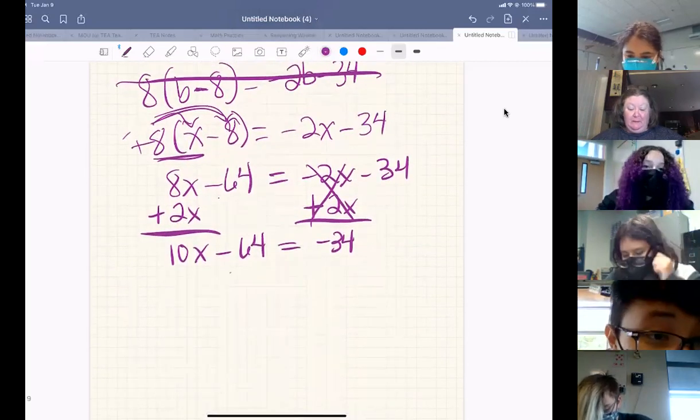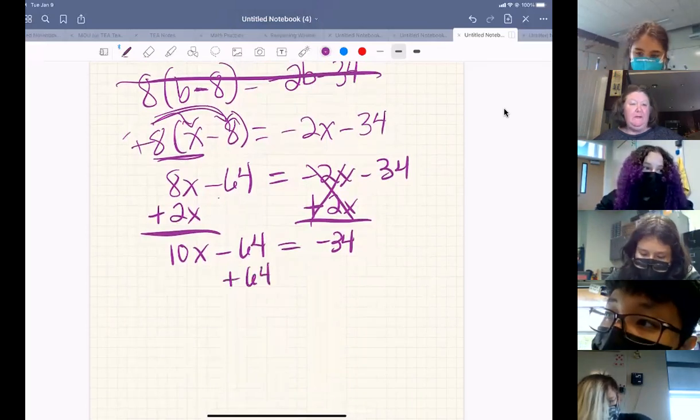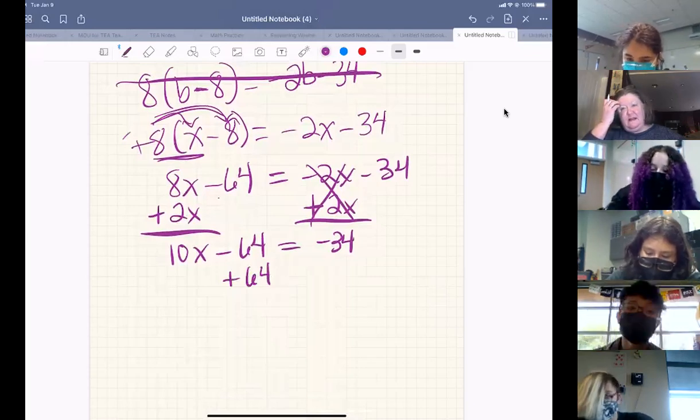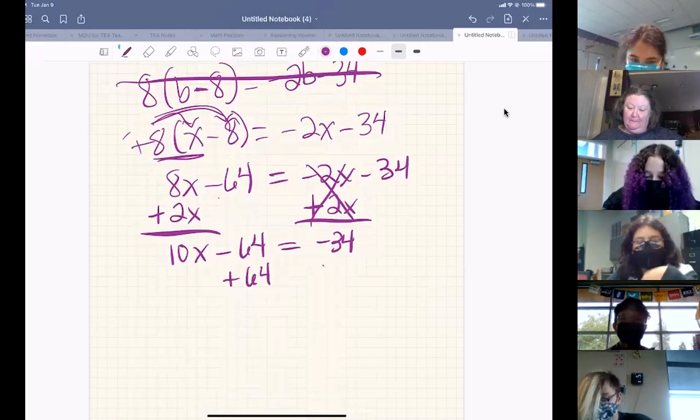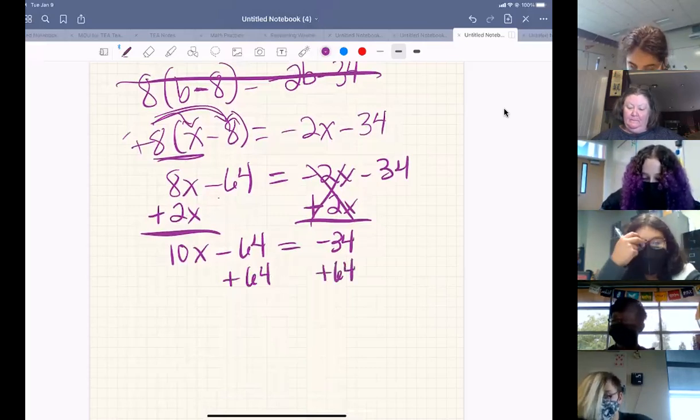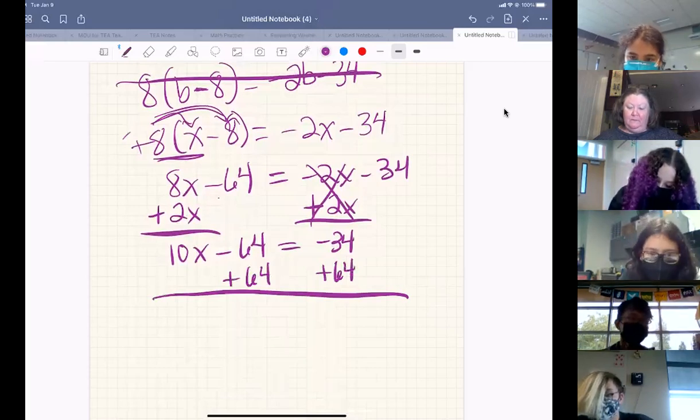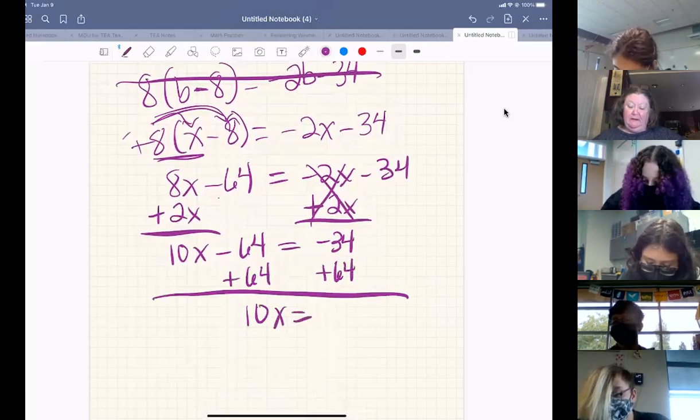Well, it's going to be the 64. And the reason is our goal is to get that variable by itself. And that negative 64 is on the side of the equal sign with the 10X. That means on the left side of our equal sign, we're going to have just 10X. And what's going to be on the right side?